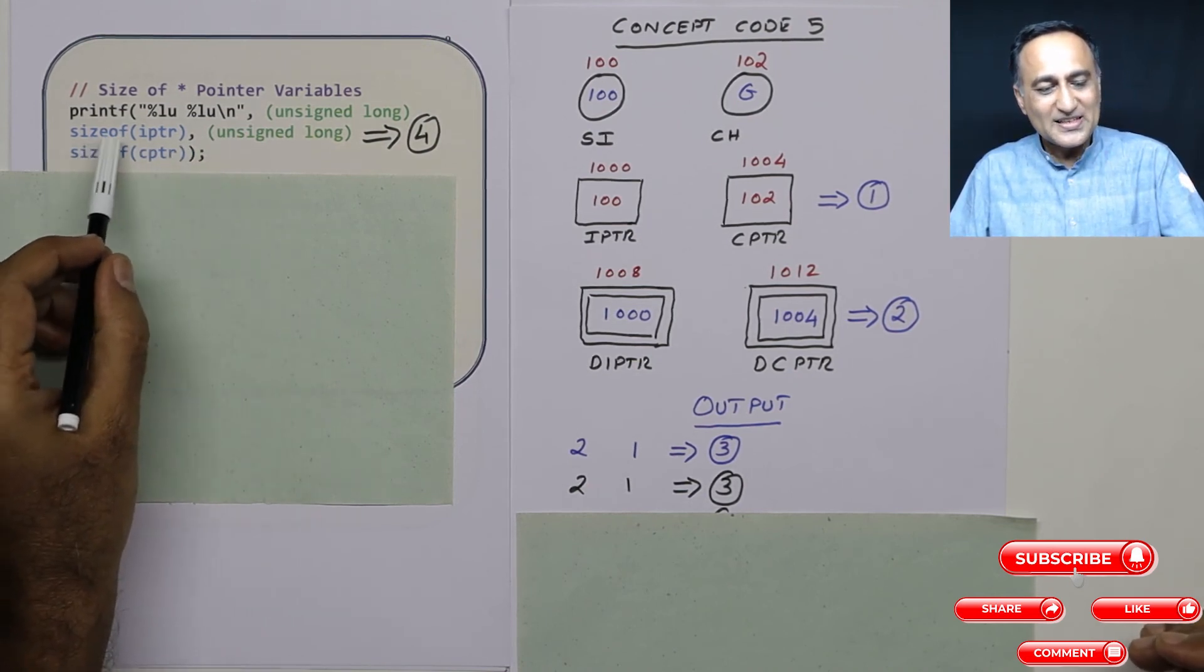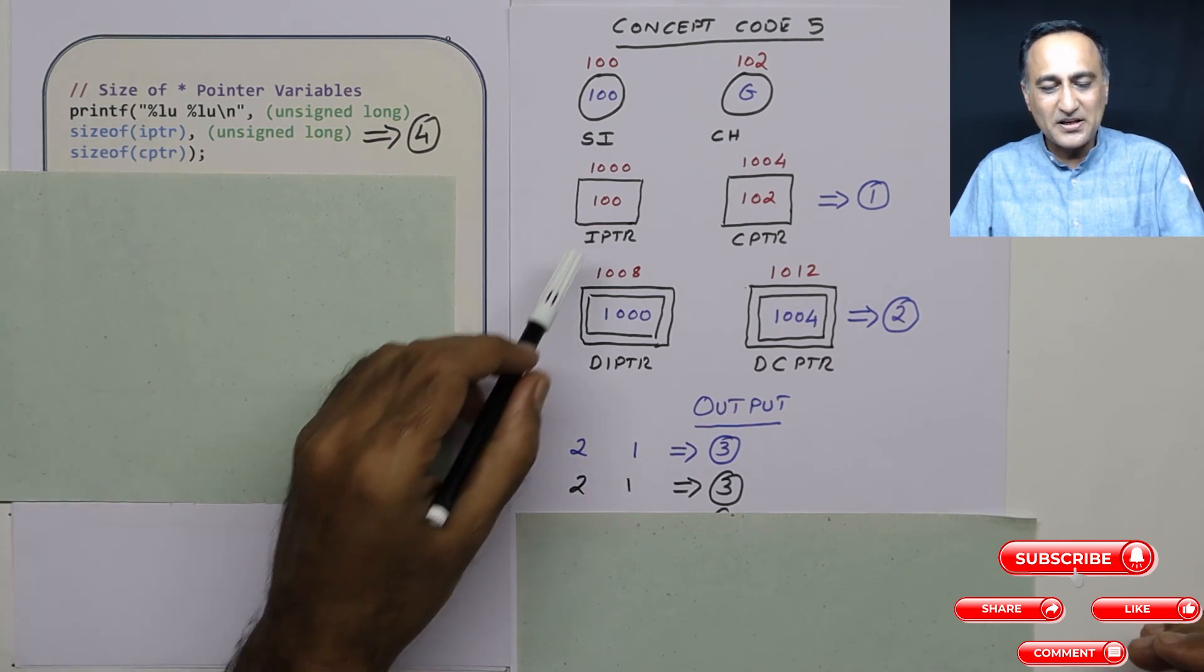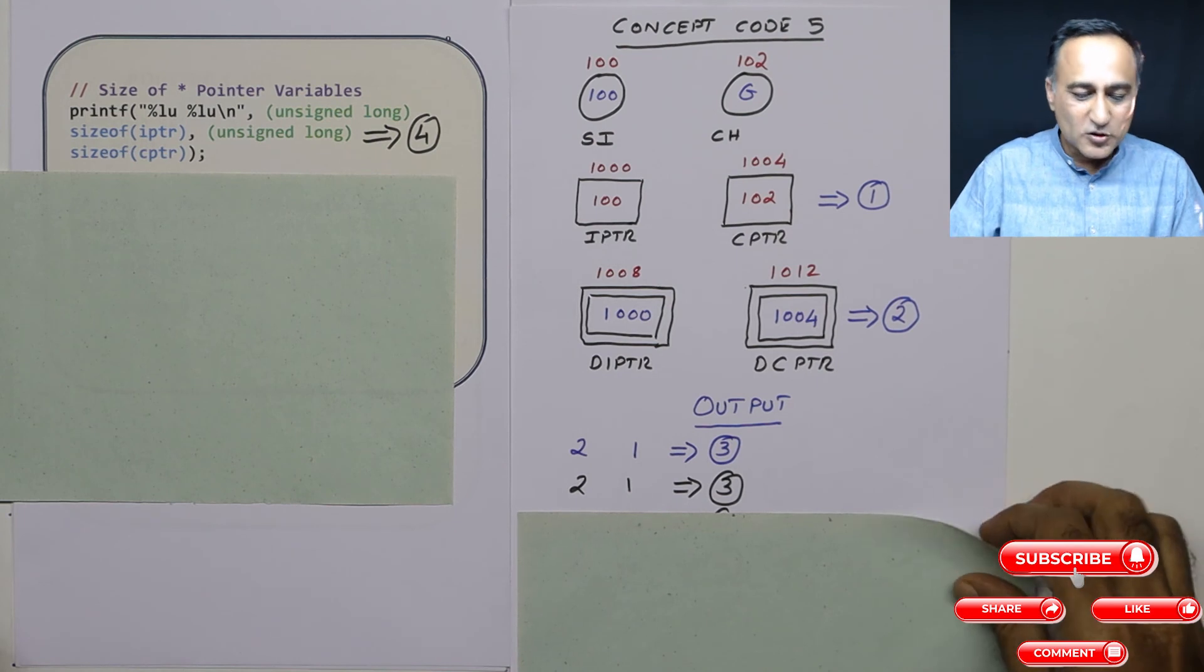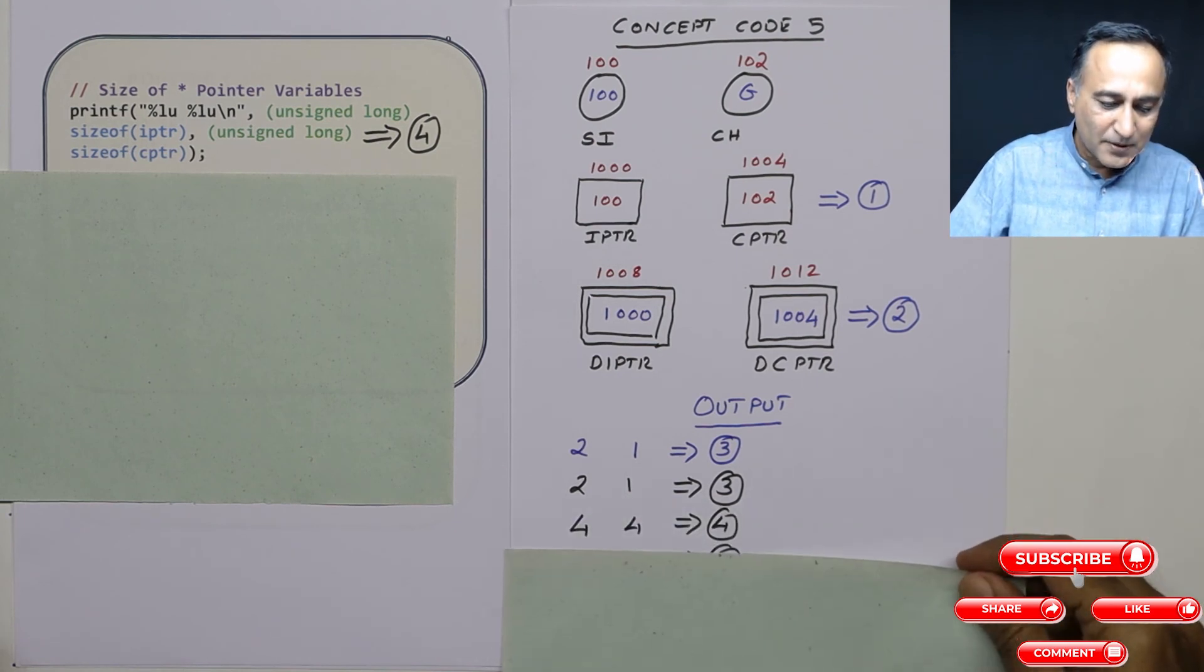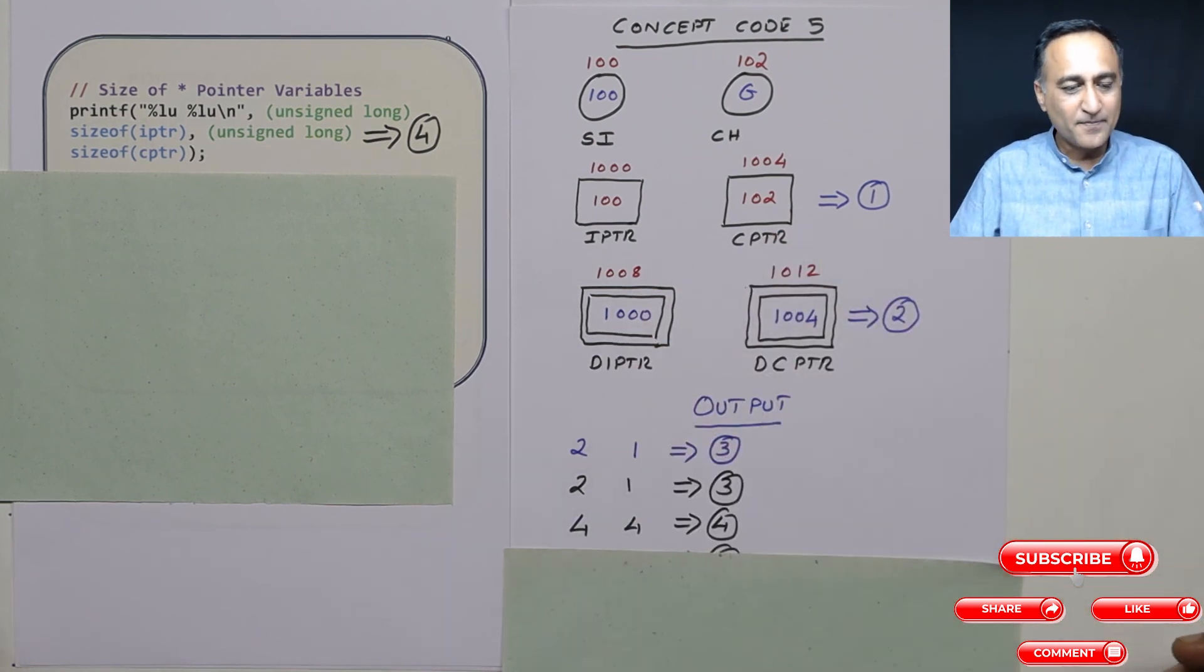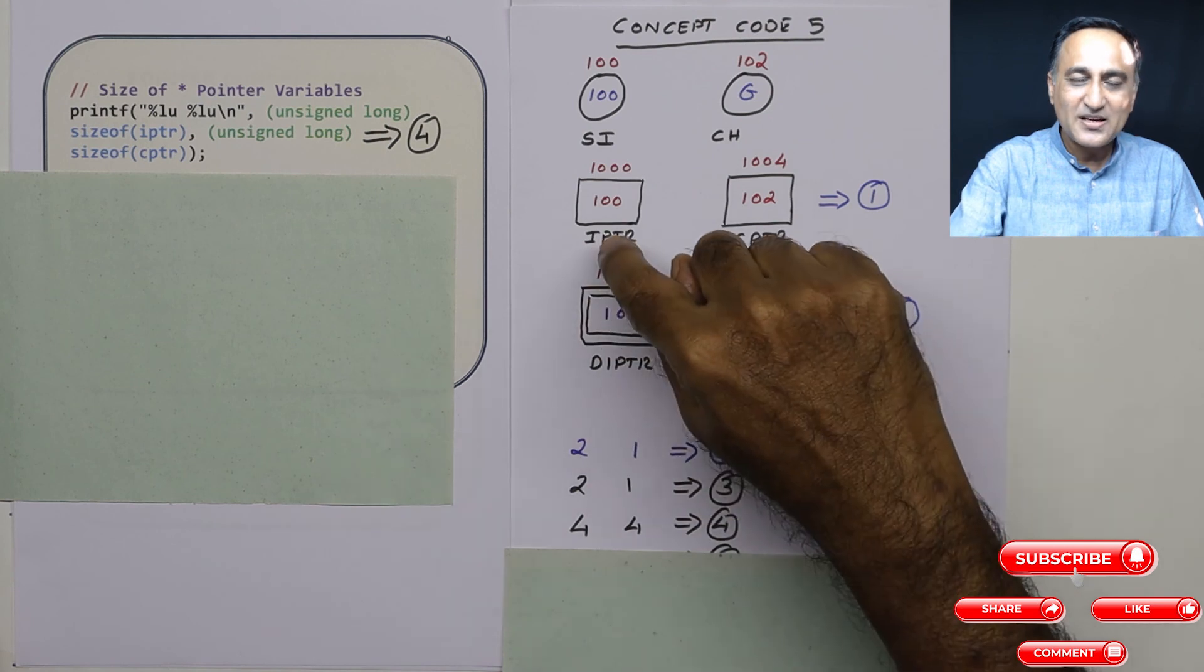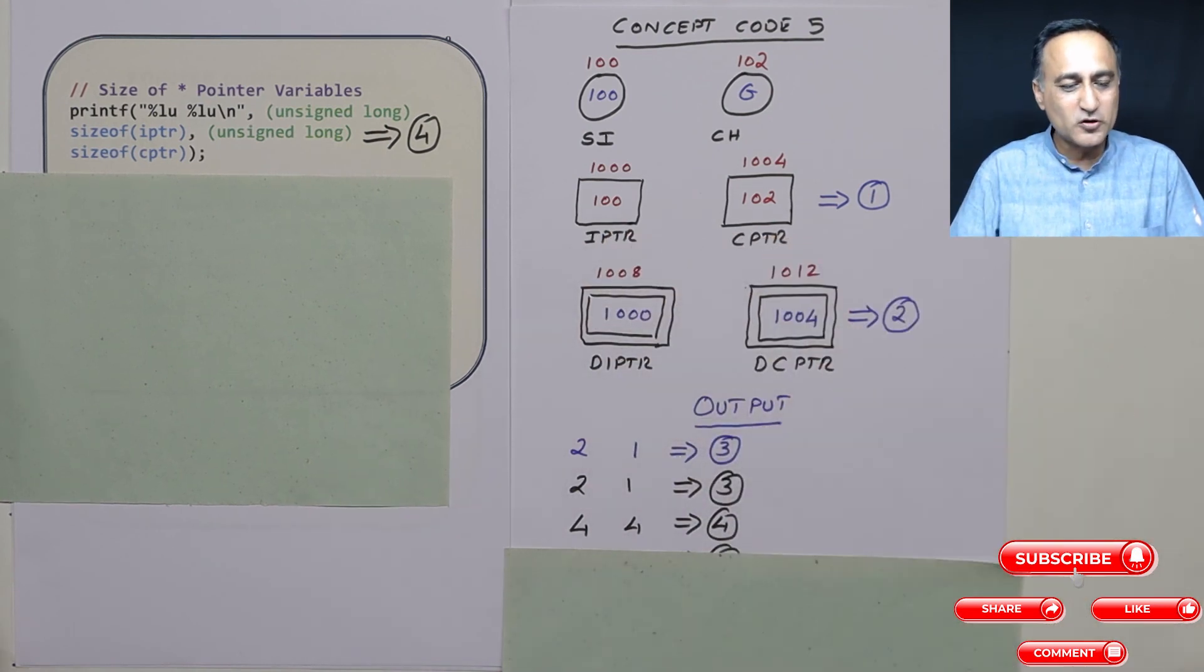So if I am trying to print the size of iptr and cptr, you will notice that they are given 4 bytes. So it's going to print 4 and 4 on my particular machine on this paper. Whereas actually when I am doing a demo of this particular program on online gdb compiler, you will see size of iptr as 8, size of cptr is also 8.